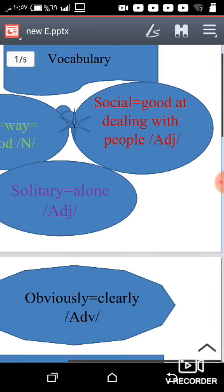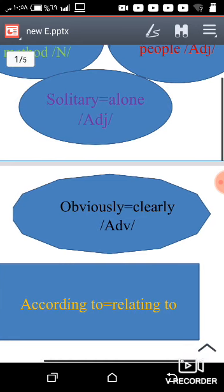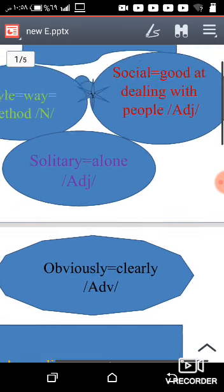The second one is social - it's an adjective. When you are good at dealing with people, you are social. Now we have the word solitary. Solitary means alone, and it is an adjective. Alone means one, so some people are social.